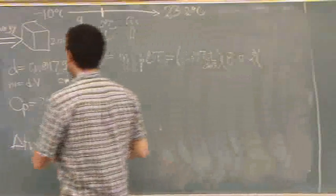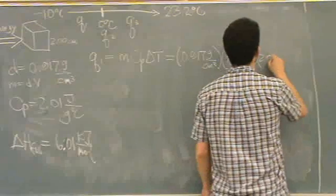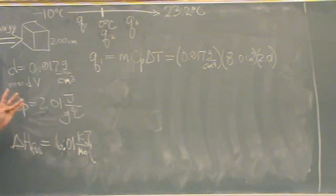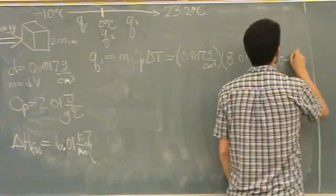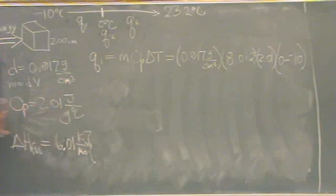The heat capacity, or specific heat, is 2.01. And the temperature change - what's the final temperature? Yeah, final temperature is 0, so you've got to go 0 minus minus 10. That's Q1, whatever that number is.